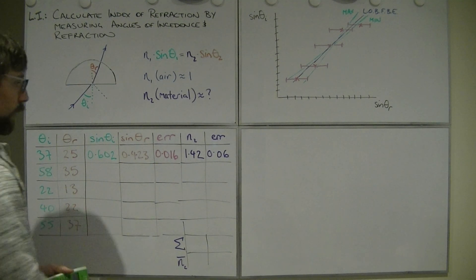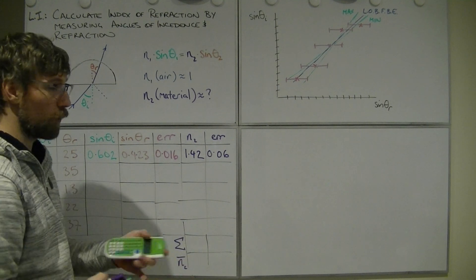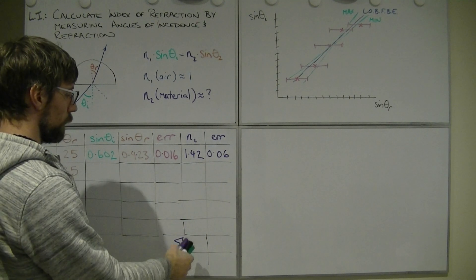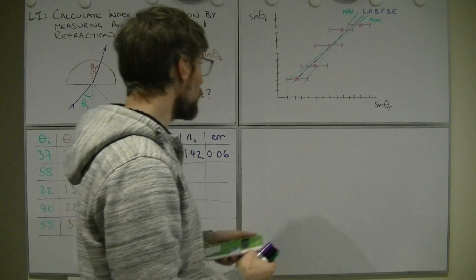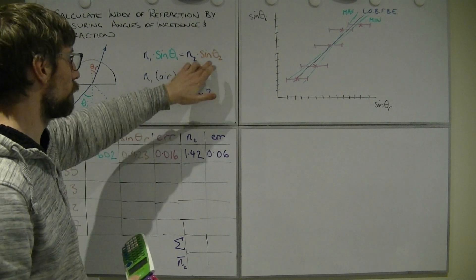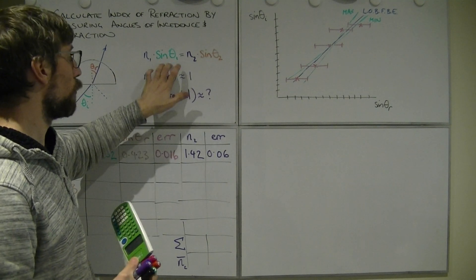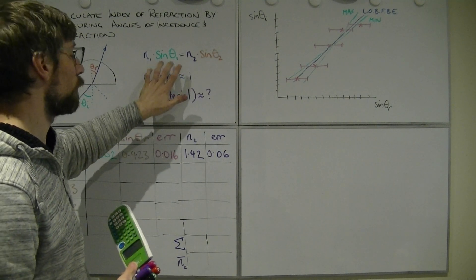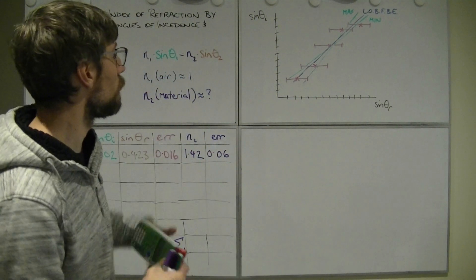From there, similar to last time, we can take the sum of those and then average them to get a reasonable approximation, or, alternately, you can do other methods to do that. If we want to do it graphically, keeping in mind we want to get n2, so we divide by sine of angle 2, which in this case is angle of refraction. So we want sine 1 over sine 2, so index over refraction. So I did index divided by refraction to be the gradient, hence the ordering.